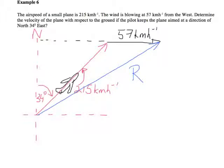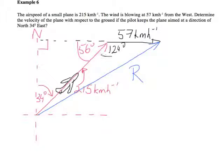We can use the cosine rule because we know the length of this side, we know the length of that side, and we are able to work out that angle in there. The way we work out that angle is: we know that this is 34 degrees, this angle will be 94 degrees, so this angle here is going to be 56 degrees. That means this angle in here is going to make that up to 180, so that angle in there is going to be 124 degrees.